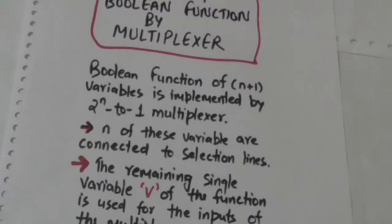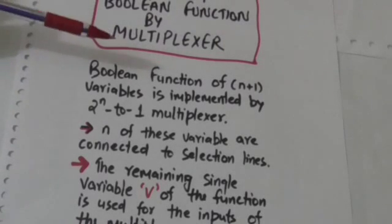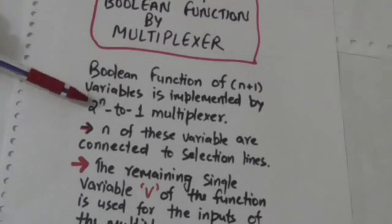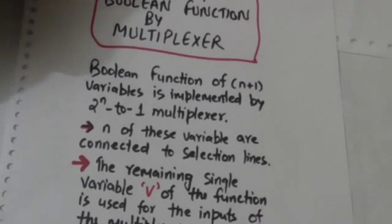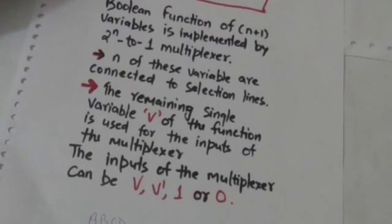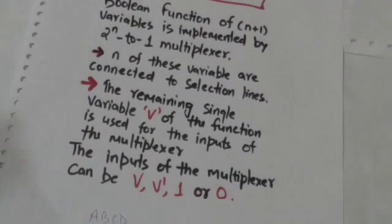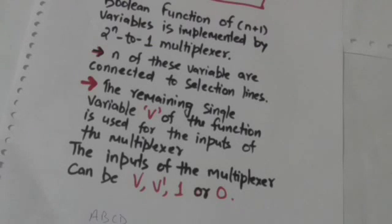So n of these variables are connected to the selection lines, and the remaining single variable v of the function is used for the inputs of the multiplexer. The inputs of the multiplexer can be v, v complement, 1, or 0.